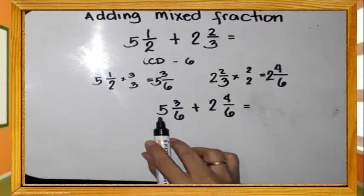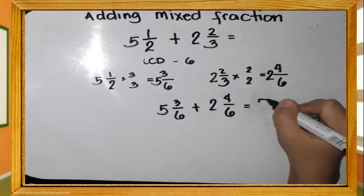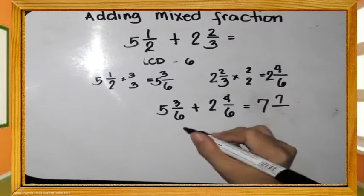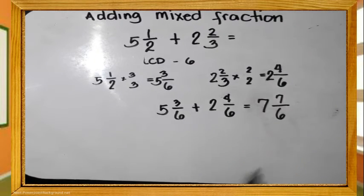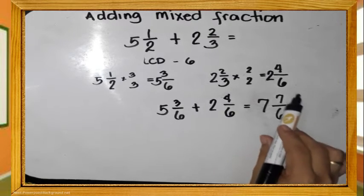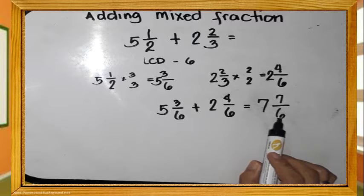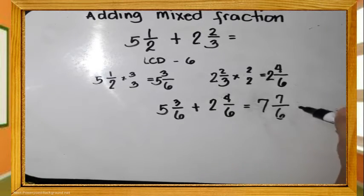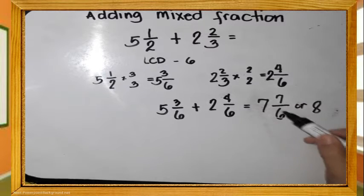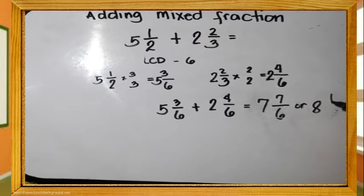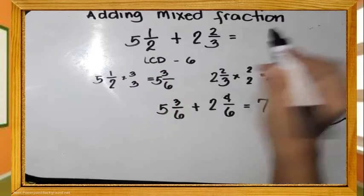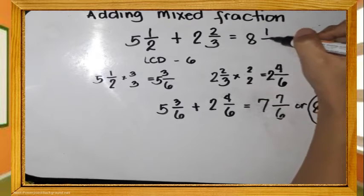Add the whole numbers: 5 plus 2 equals 7. Add the numerators: 3 plus 4 is 7. Copy the denominator, 6. Simplify — since 7 sixths is improper, divide: how many 6s are in 7? That is 1, with remainder 1. So 7 plus 1 equals 8. The final answer is 8 and 1 sixth.